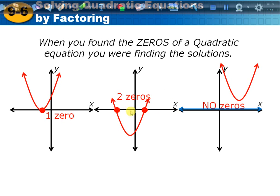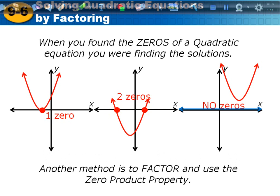Where the parabola crosses the x-axis — the zeros — are actually the solutions to the quadratic. Another method we're going to learn today to find these zeros or solutions is to solve by factoring and by using the zero product property. So what we're finding today, if you were to graph it, is where it crosses the x-axis.